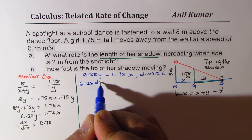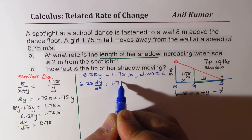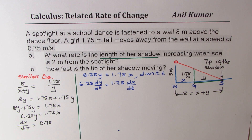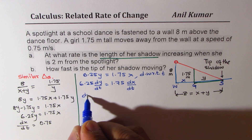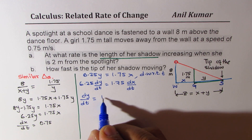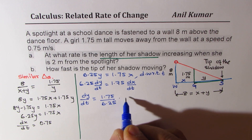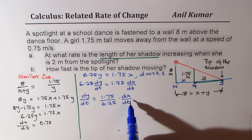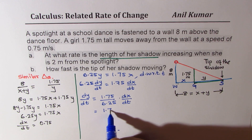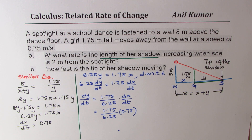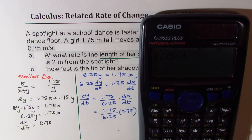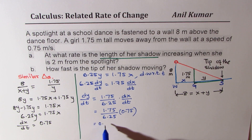We get 6.25 dy/dt = 1.75 dx/dt. So dy/dt = (1.75 / 6.25) × dx/dt. Substituting dx/dt = 0.75: dy/dt = 1.75 × 0.75 / 6.25 = 0.21 meters per second.